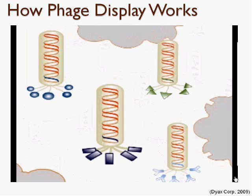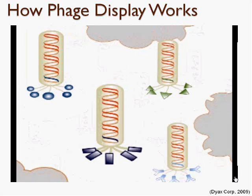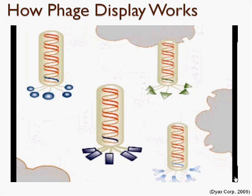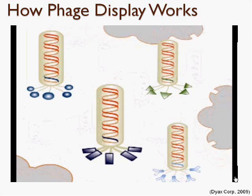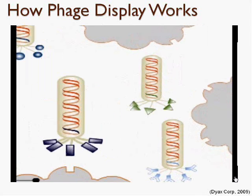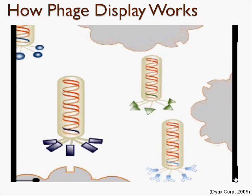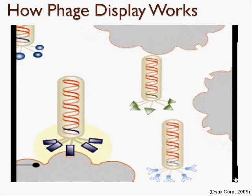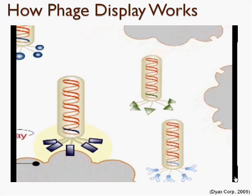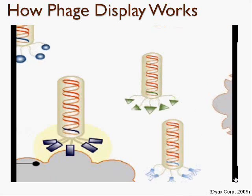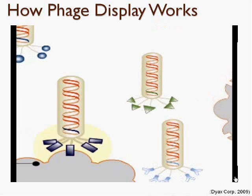Now that these phages are produced, they will be introduced into a dish with the desired DNA sequence. The zinc finger proteins specific to that sequence will bind to that DNA. However, any phages that are not specific to that DNA sequence will remain unbound. The dish could then be washed to remove any unbound phages, and DNA sequencing can reveal which zinc finger proteins show specificity in binding to that DNA sequence.